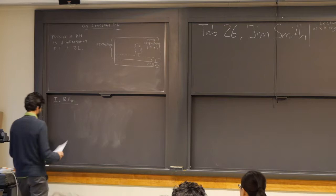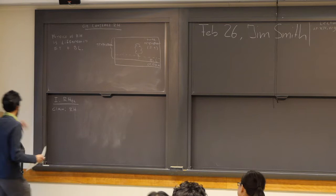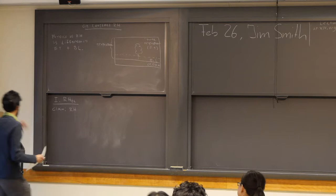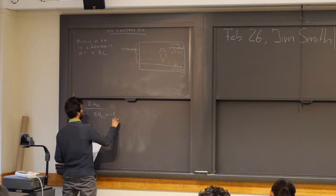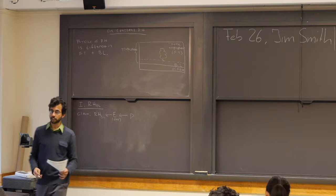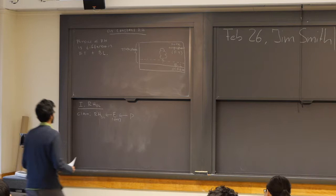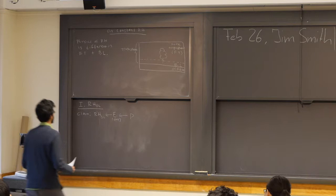Relative humidity in the boundary layer — subscript BL. My claim is that relative humidity in the boundary layer is governed by evaporation, E, or is closely connected to it. The reason this connection is important is because evaporation is closely tied to precipitation. Evaporation is the amount of water that goes into the atmosphere; precipitation is the amount coming out. In a steady state, the total amount of water in the atmosphere is not changing, so these have to be equal: E equals P.